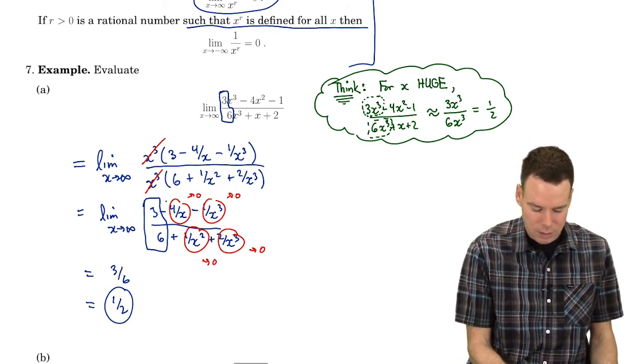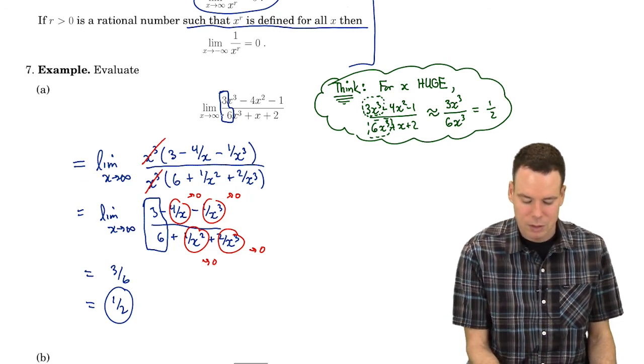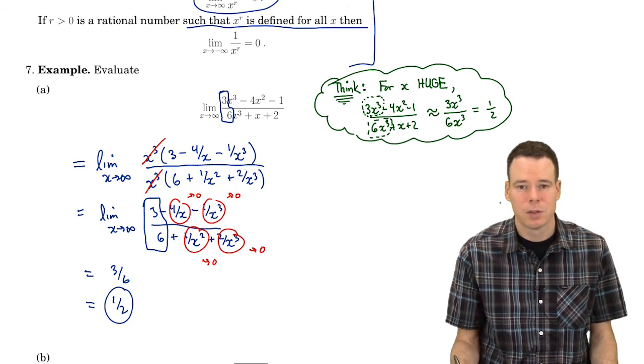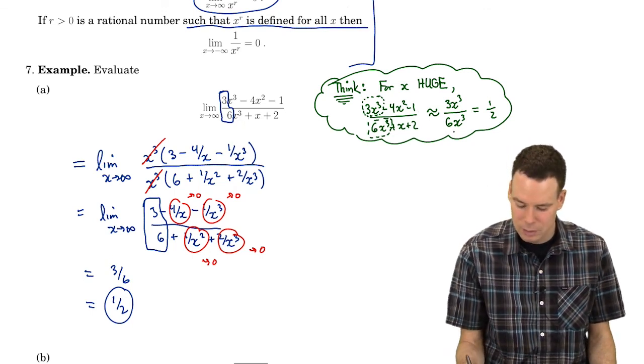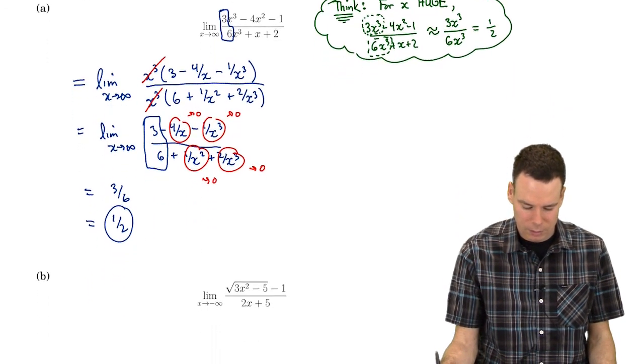So this is what's written here in our calculation, is how you would typically approach a problem like this. But don't forget that you can think through what the answer possibly is by just thinking about what happens when x is big. Okay, so let's look at the next example.